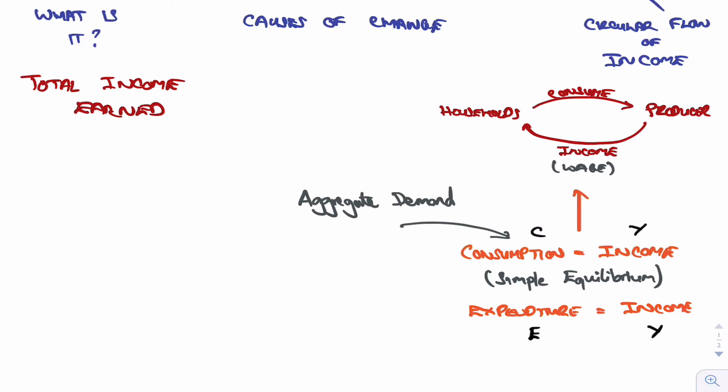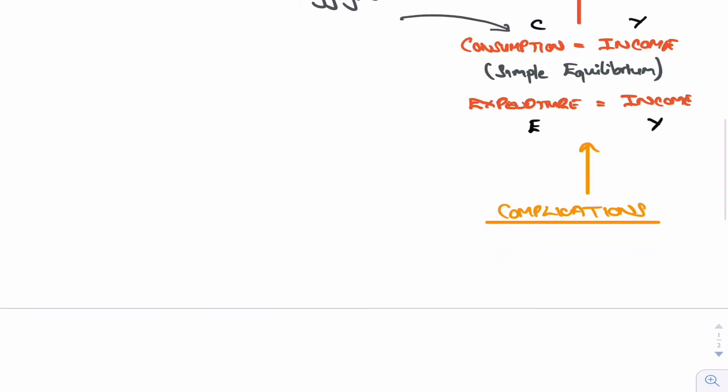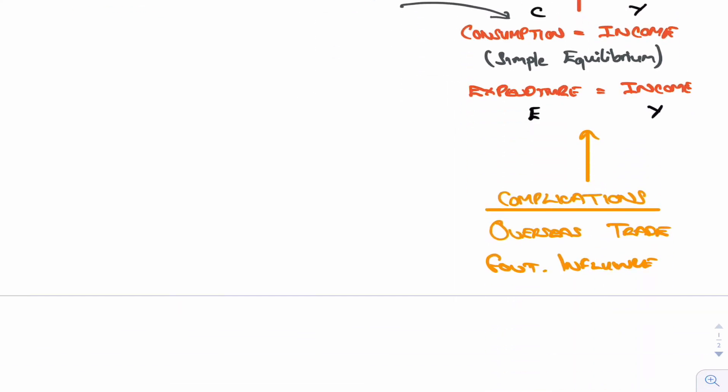But obviously there are complications to this model. The complications are - well, there isn't a circular flow because sometimes we trade overseas, so that will disrupt it. Also government will influence this - in our simple model there's no mention of the government. And finally, of course, you might not spend all that you receive - you might have some savings. So there are some complications.